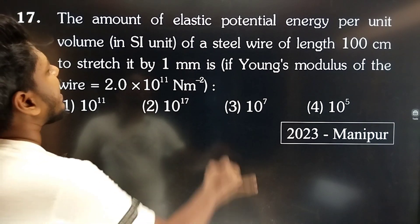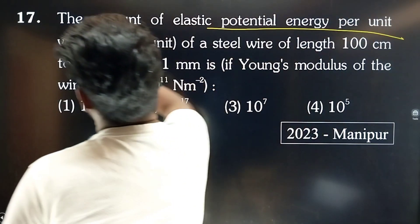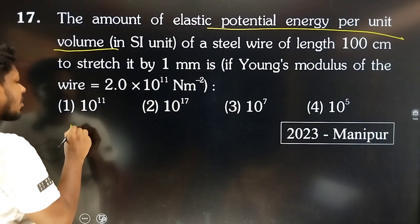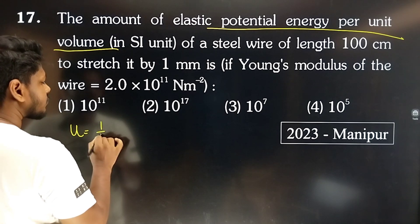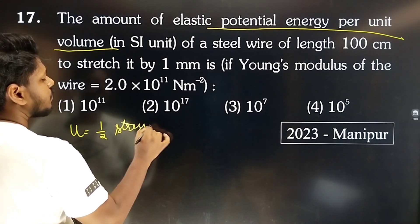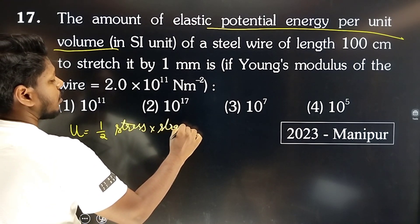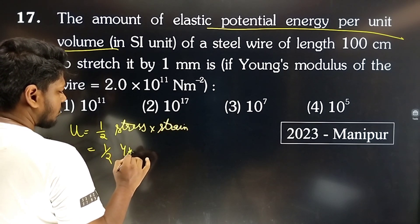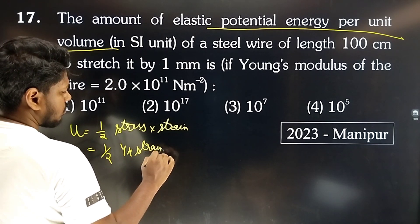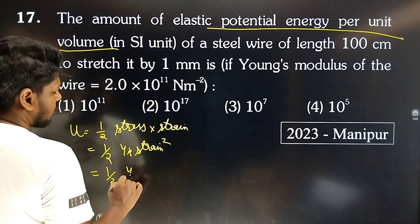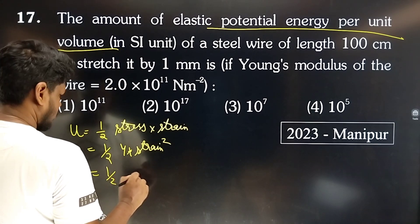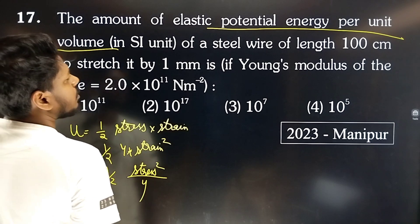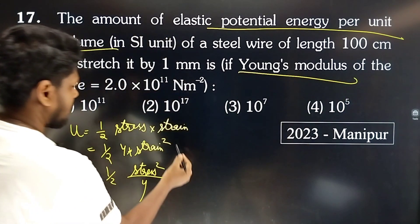The elastic energy per unit volume has three equivalent formulas: half into stress into strain; half into Young's modulus into strain squared; and stress squared divided by (2 times Young's modulus). Now we can use any of these formulas.